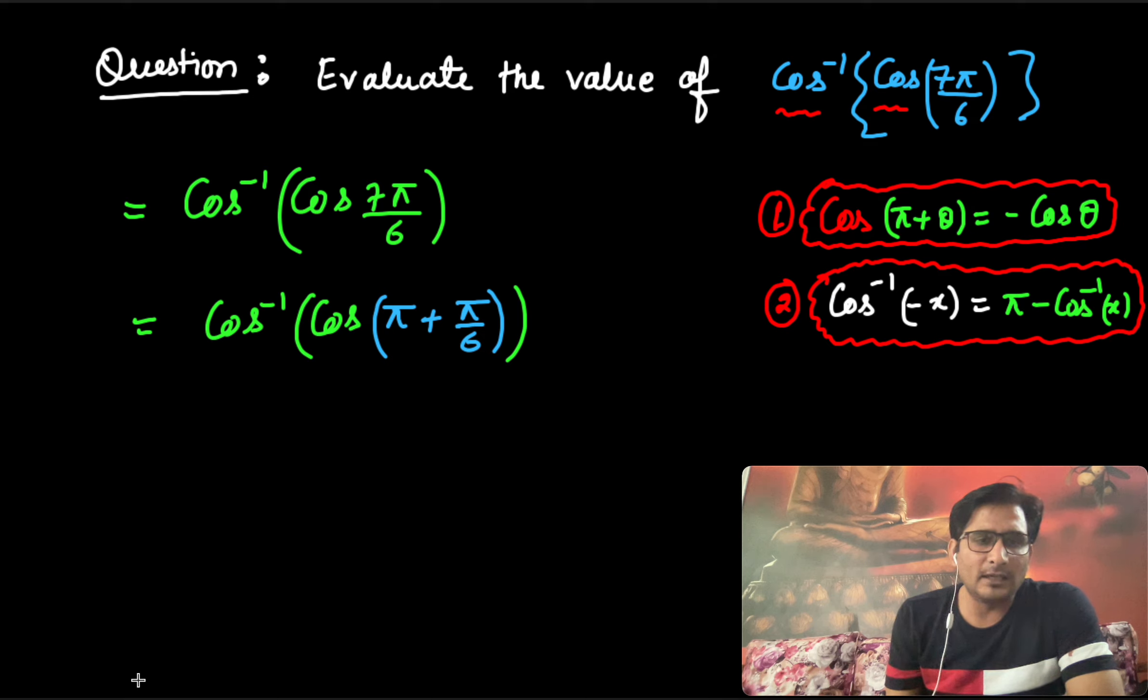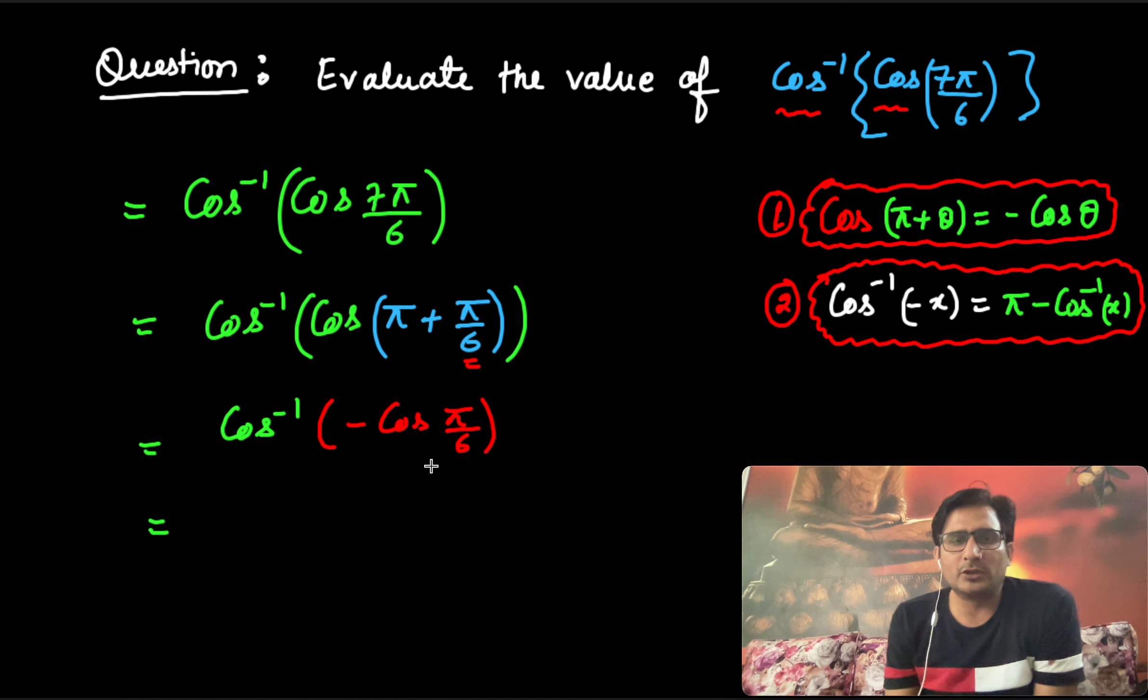Now apply formula number 1. It is cos inverse, inside the bracket cos(π + θ). Cos(π + θ) can be written as minus cos θ, so minus cos(π/6).